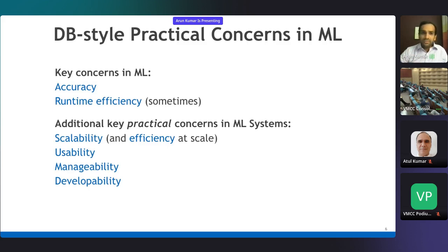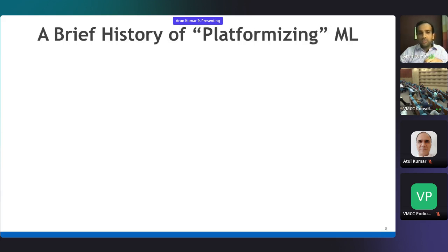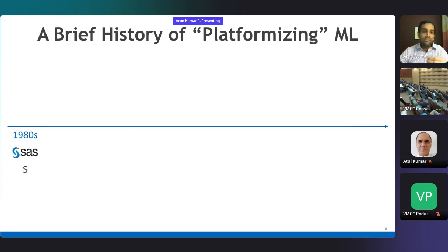I'm not the only one saying this. The industry has also been talking about platformizing ML. This particular paper from Google has been widely read and is very influential in technical data and machine learning systems—it appeared at NeurIPS. They talk about how ML code is this tiny piece in the middle of a giant complex ecosystem involving data collection, feature extraction, process management, serving, and so on. This sort of platformizing ML is not new—it has been happening for decades. Let's do a brief history recap.